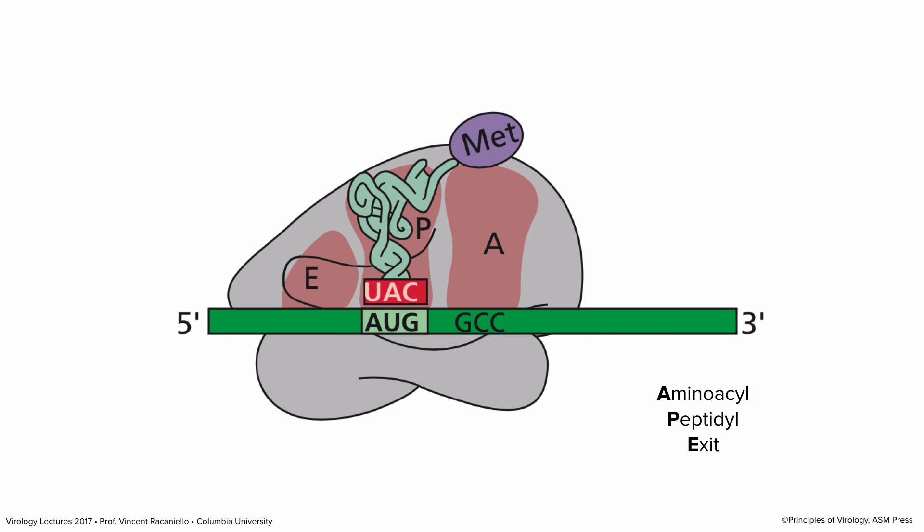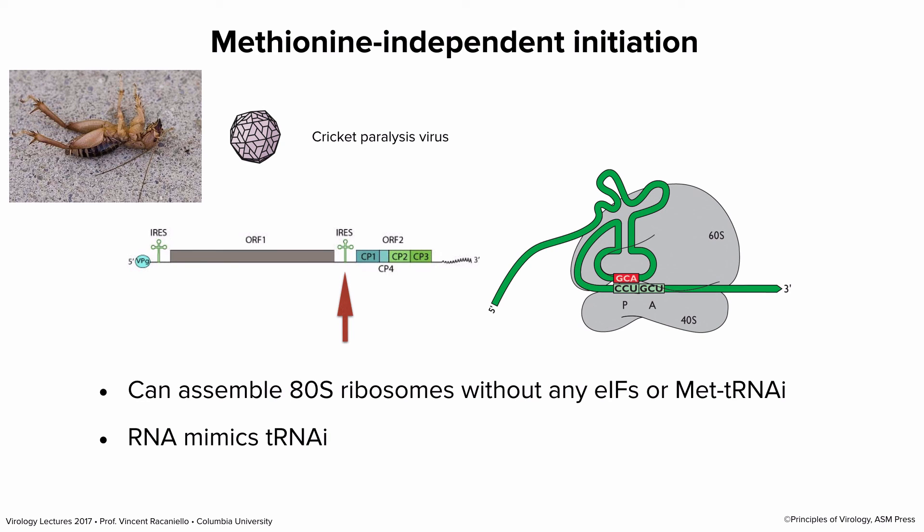Whether initiation occurs by cap binding or internal ribosome entry, in the end the ribosome is positioned on the initiating codon with a met-tRNA in the P site. The ribosome has three functional sites: P (peptidyl site) where the peptide bond forms, A (aminoacyl site) where the next amino acid enters, and E (exit site) where the discharged tRNA leaves. Most initiations occur on AUG codons, but there are some examples of methionine-independent initiation in virus-infected cells.